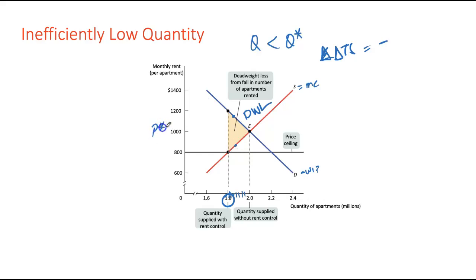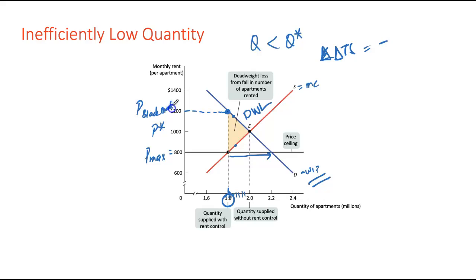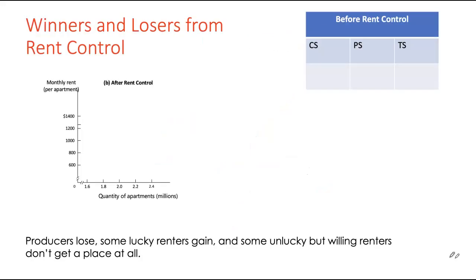What would the black market price be? With P-max at $800 and exchange quantity at 1.8 million units, sellers know there is a huge shortage. If able to sell illegally, they'll charge the maximum consumers are willing to pay — given by the height of the demand curve. At 1.8 million units, the demand curve gives a price of $1,200 per month. So the black market price is $1,200, charged illegally behind closed doors.